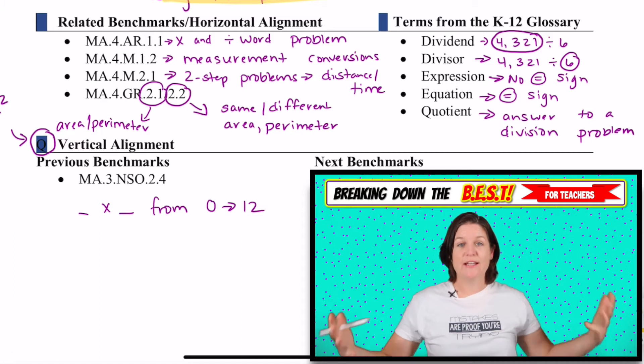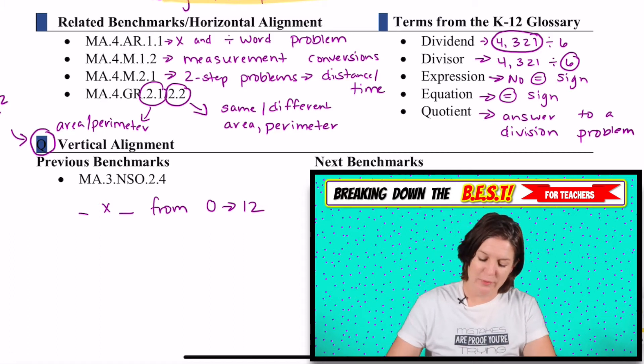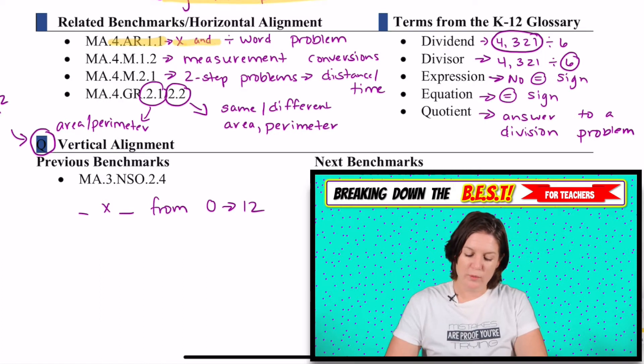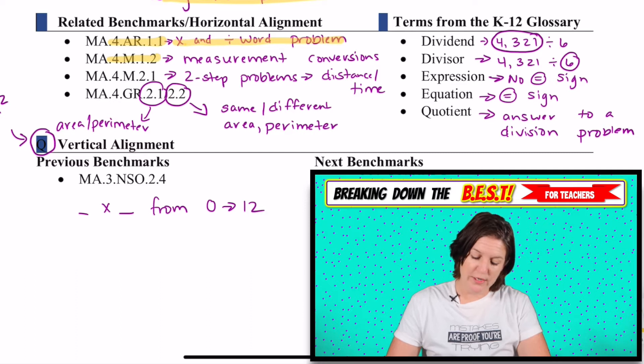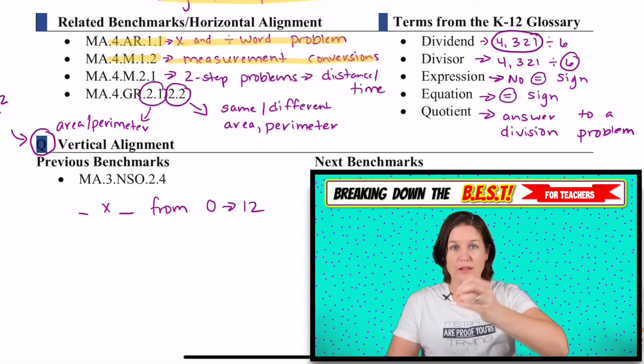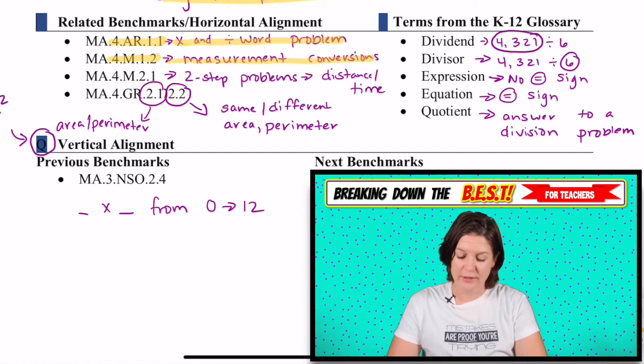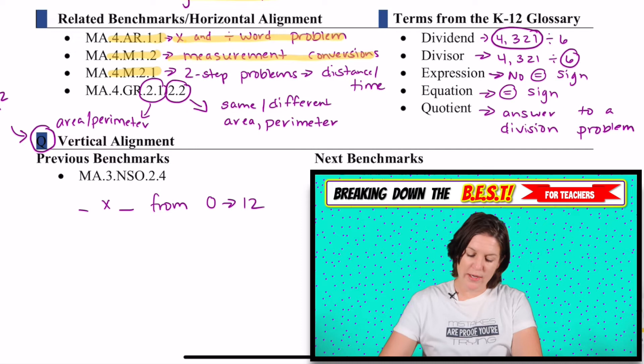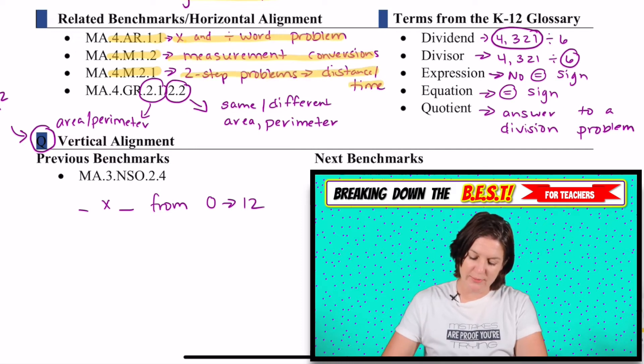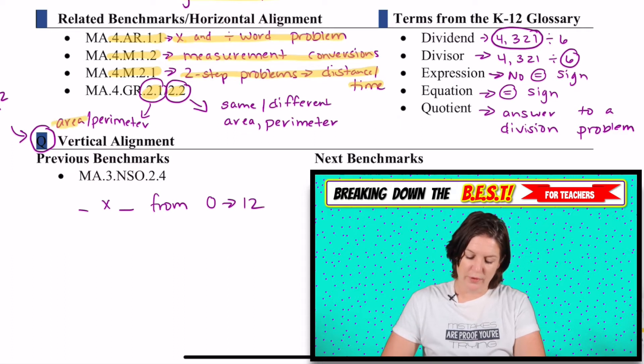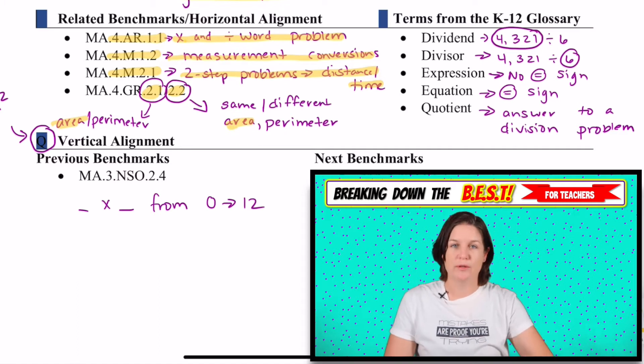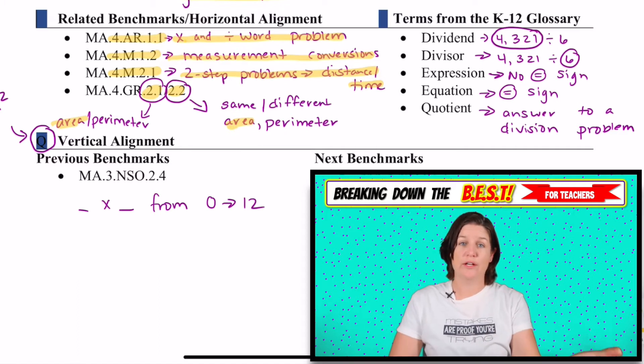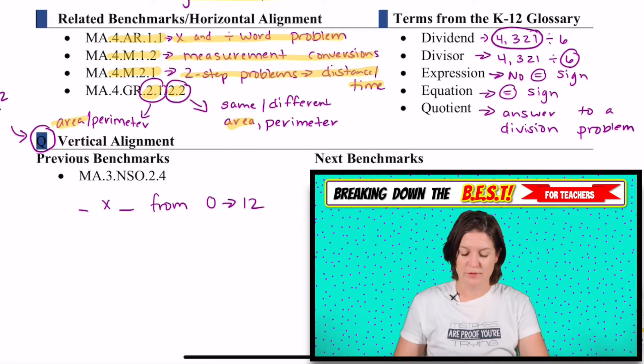What are the related or horizontal alignment in fourth grade? We've got 4.AR.1.1, which is multiplying and dividing word problems. We have 4.M.1.2, which is measurement conversion. When we're going from a small unit to a larger unit, we would actually divide there. 4.M.2.1 is two-step word problems using distance and time. And these geometry reasoning standards are with area. When we have area, we're multiplying or even using division if we know the area but we're trying to find the side length.